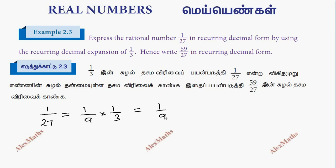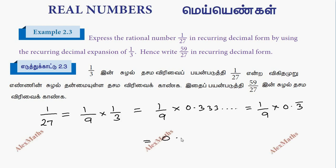1 by 9 is 0.3333, so 1 by 9 is 0.3 bar. So 1 by 27 is 0.037. So 0.037.